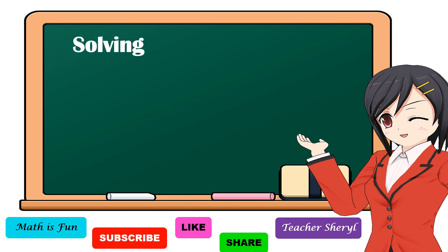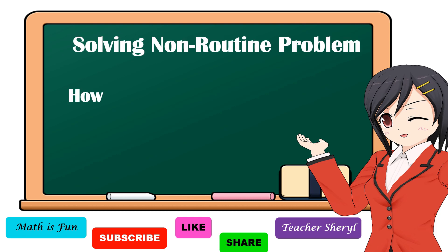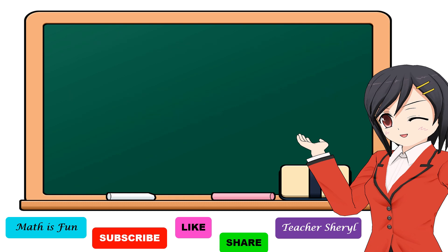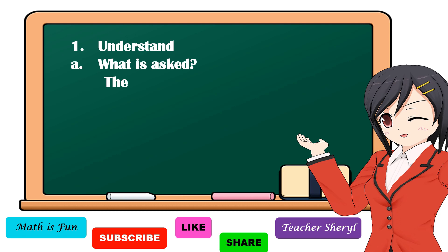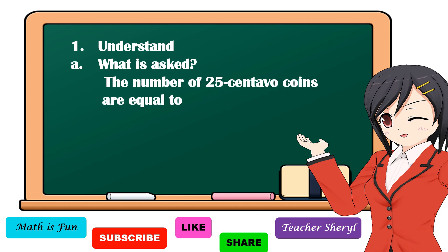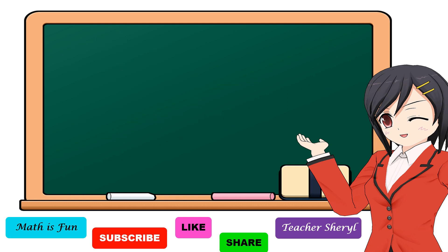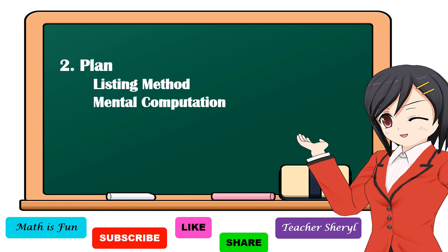Our next problem is a non-routine problem: How many 25-centavo coins are equal to 6 pesos? To understand what is asked — it is asking for the number of 25-centavo coins equal to 6 pesos. The given facts are: 25-centavo coins and 6 pesos. To make a plan, we're going to use the listing method or mental computation.